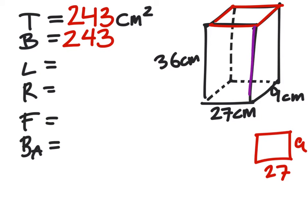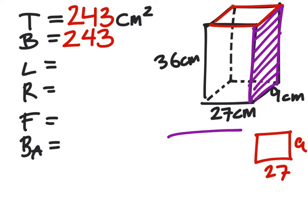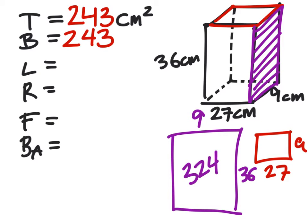Next up, we've got the left and the right. We can see the right side on my picture a little bit easier. So I'm looking at this surface right here, which if I draw it, looks like I've got a 9 by 36 rectangle. When I multiply 9 by 36, I get 324 square centimeters. So I'll write that in for the left and the right side, because they are the same.